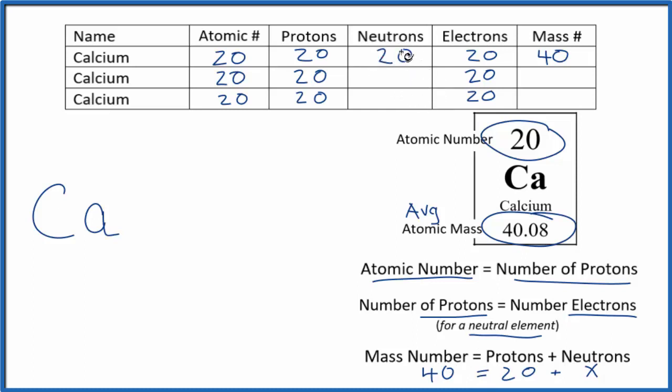Most of the calcium, if you had a block of calcium, almost all of the atoms, most of them would be this isotope of calcium. In fact, about 96% of them would be this isotope.